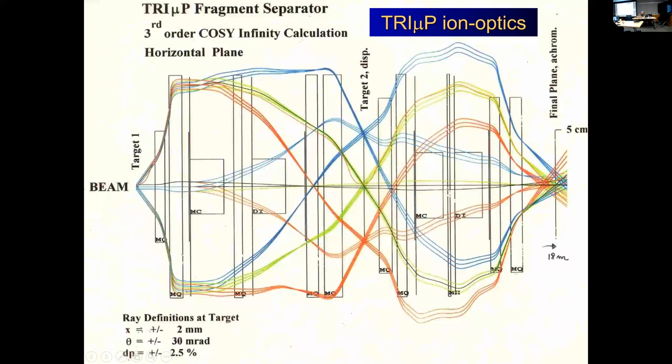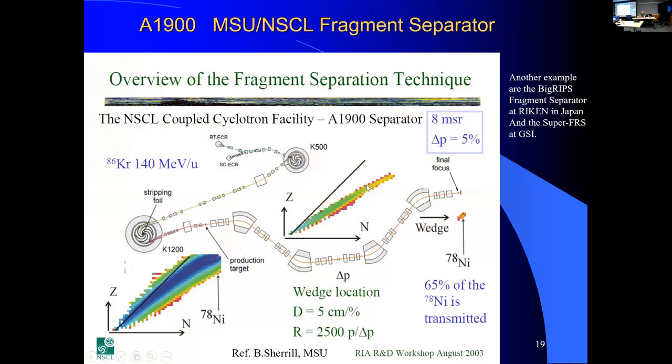You see also the acceptances are studied here, so that we know how large the magnets are, so everything was derived from these ion optical calculations. This is a principle of a fragment separator. And I'm just mentioning here that you have the fragments of the A1900 here at MSU, and for the effort there will be another fragment separator. And they work with degraders or wedges.